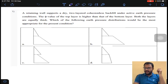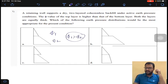A retaining wall supports a dry two-layered cohesionless backfill under active pressure conditions. The phi value of the top layer is higher than the bottom layer, that is phi 1 greater than phi 2. Which of the following earth pressure distribution diagrams would be most appropriate for the present condition?